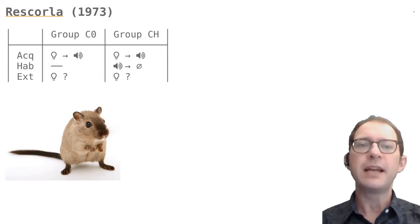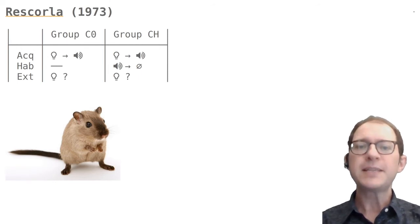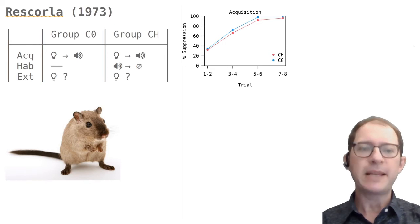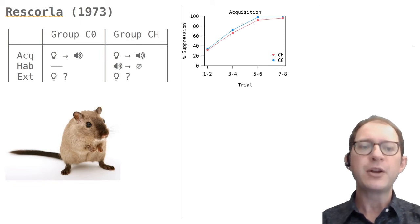Now we look at an experiment by Rescorla — a fear-conditioning experiment. All rats learned to be afraid of a light that was followed by a very loud noise. As we can see in the graph, this worked as expected, and when the light was on, all rats showed fear, measured by how much they stopped lever pressing for food — a higher value means more fear.